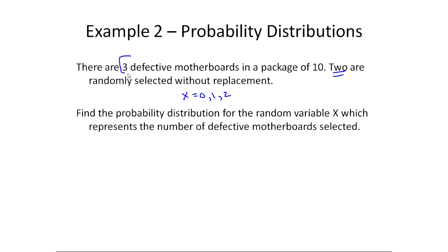Even though there's three in the pack, we're only picking two, so the most we could get are two defective motherboards. A probability distribution is going to be essentially a table because this is discrete, of values of x and their corresponding probabilities.